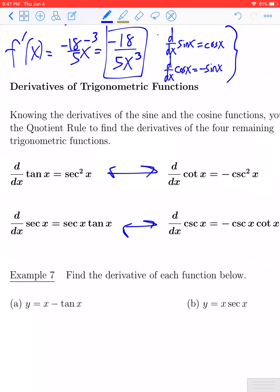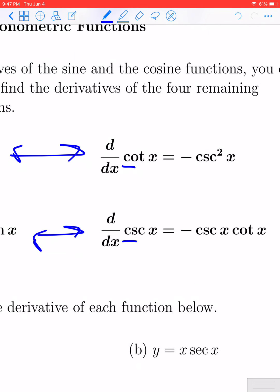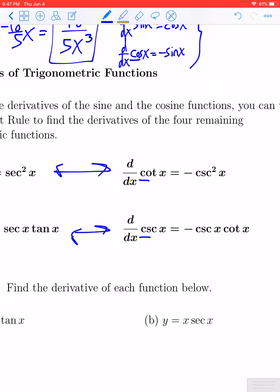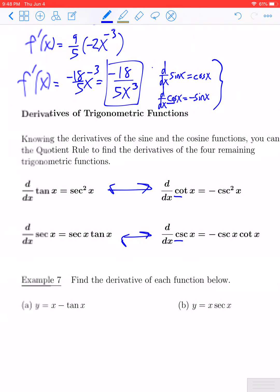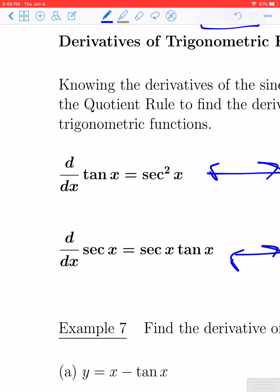Another common trick for memorizing the signs — the signs, not the sine function — is that three trig derivatives are positive and three are negative. If you have a trig function that starts with a 'c', it's going to have a derivative with a negative sign. For example, derivative of cosine is negative sine, derivative of cotangent is negative cosecant squared x, and derivative of cosecant is negative cosecant x cotangent x. Sine, tangent, and secant will have positive derivatives.